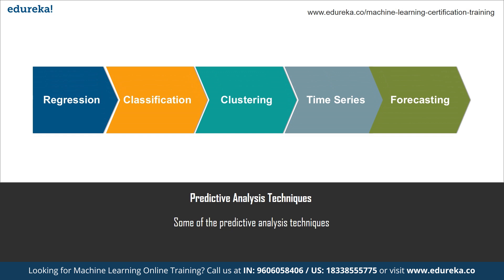The classification predictive modeling task approximates a mapping function from input variables to discrete output variables. The main goal is to identify which class or category new data will fit into. For example, heart disease detection can be identified as a classification problem — it is a binary classification since there can only be two classes: has a heart disease or does not have a heart disease. The classifier needs training data to understand how input variables relate to the class, and once trained accurately it can detect heart disease for a particular patient. Since classification is a type of supervised learning, the targets are also provided with the input data.